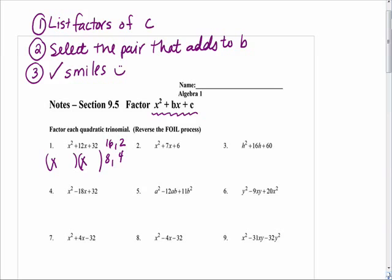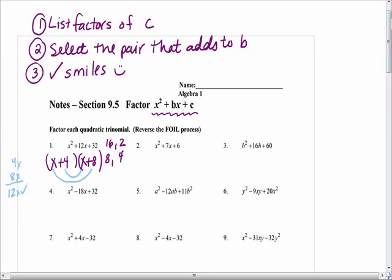Which one should we use? Evan? 8 and 4. Why? Because 8 and 4 add to 12. Perfect. Everything's positive, so I'm going to say plus 4 and plus 8. So far we've listed the factors of c, and we selected the pair that adds to b. The last thing is to do something called check your smiles. The smiles are when you multiply the inner terms and get 4x, and you multiply the outer terms and get 8x, and you check that it adds to 12x.